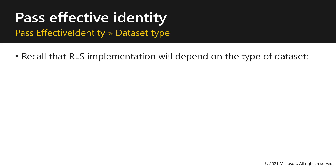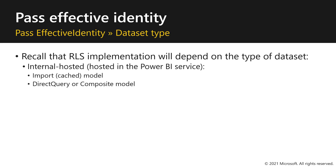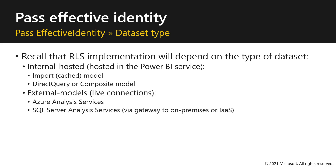In the previous video, we explained that row-level security implementation will depend on the dataset type. There are four different dataset types that we must consider when enforcing RLS in apps: internal hosted models, models hosted in the Power BI service, and external hosted models which are live connections to products like Azure Analysis Services and SQL Server Analysis Services. We will now describe how to pass effective identity for all four dataset types, starting with external hosted models.